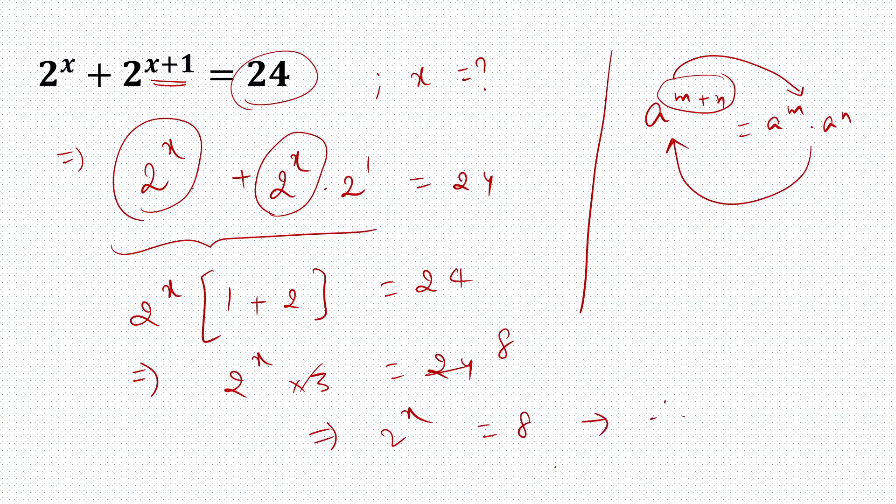So therefore x will be equal to 3, right? Because 2 cube is 8. Or what you can do is you can write 8 as 2 raised to power 3, and since we have same base we can equate the exponents. So we can equate the exponents and we will get x equal to 3.